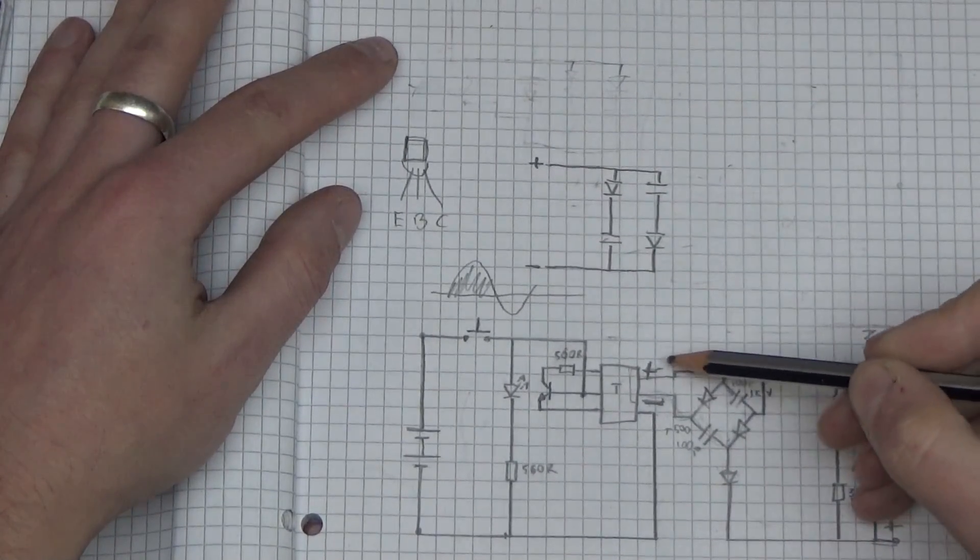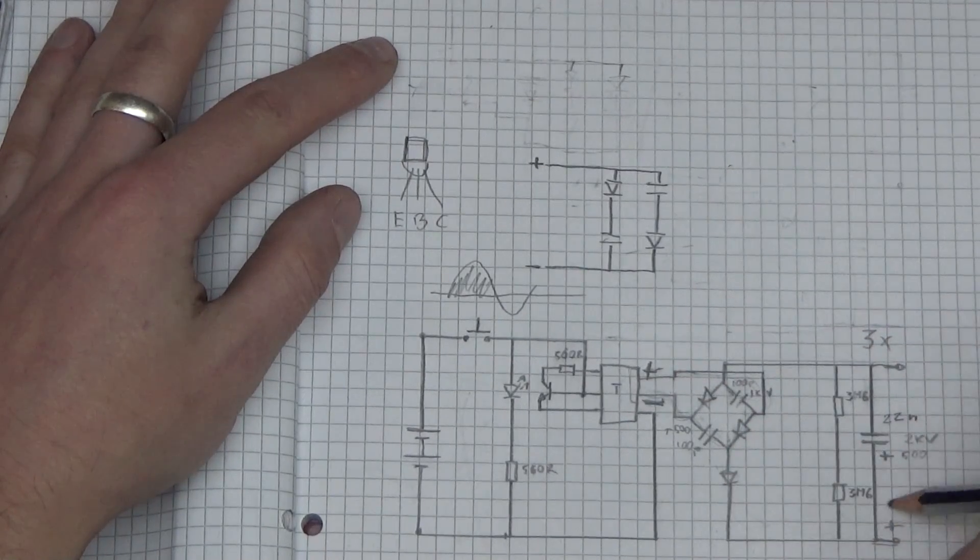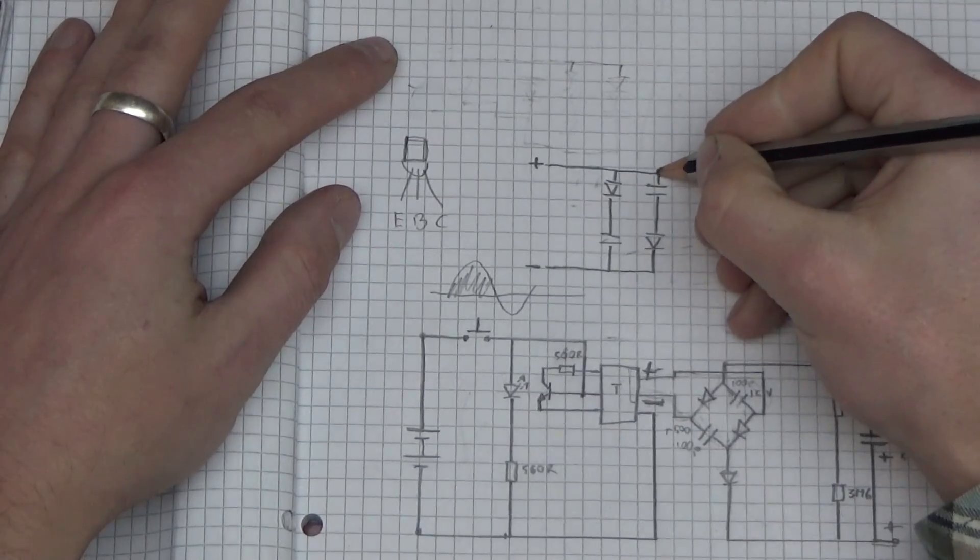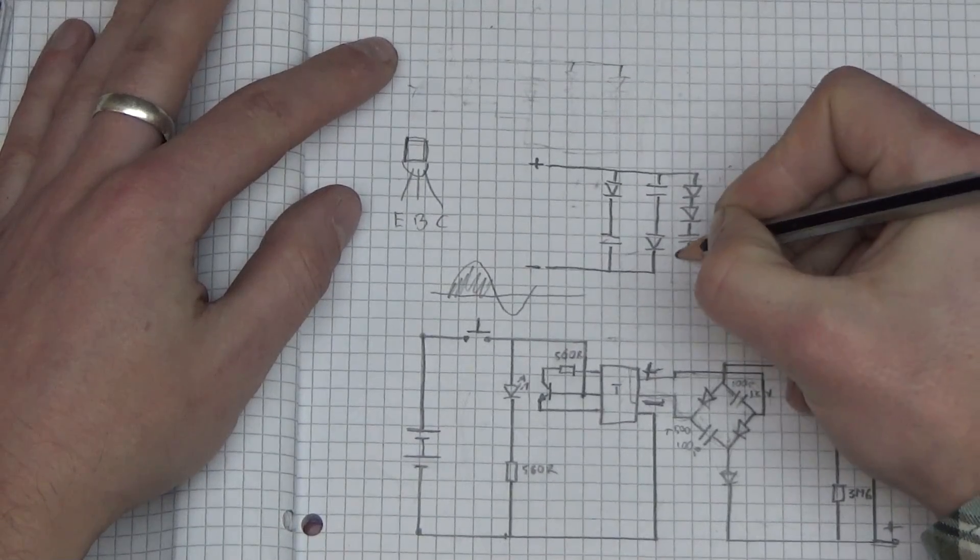And the third path is from here through this diode, through this diode, through this cap and then through this diode and back to negative. So we've got two diodes, a cap, and another diode.